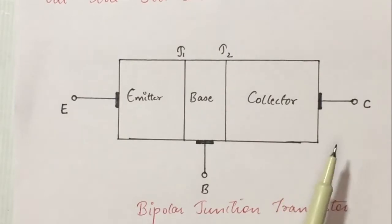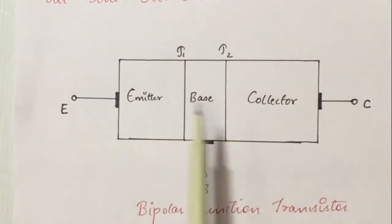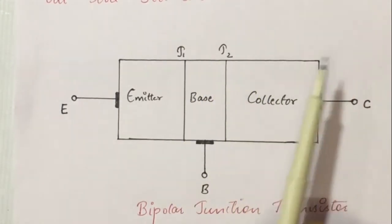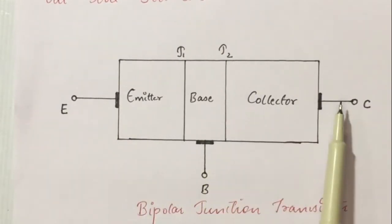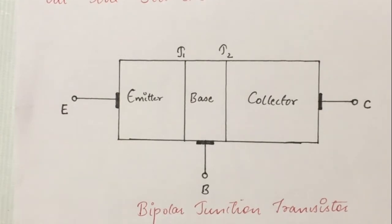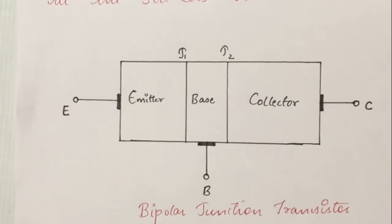A bipolar junction transistor is made of three regions: emitter region, base region, and collector region. There are two junctions, J1 and J2, and also three terminals — emitter terminal, base terminal, and collector terminal. These transistors are majorly used for amplification and switching purposes. A transistor holds the ability to act either as a conductor or an insulator whenever an external supply voltage is provided, and due to this ability it exhibits either amplification or switching characteristics. It is known to be a current control device because the current flowing from one terminal to another is controlled by the biasing applied to it.